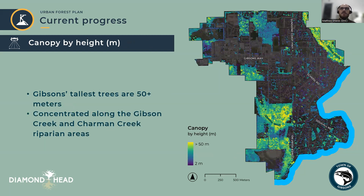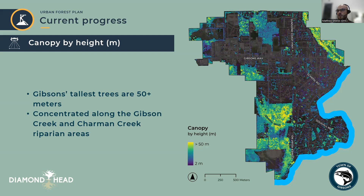The LIDAR method of mapping canopy also enables us to see the size of individual trees in Gibsons and points towards some potential candidates for Gibsons' largest tree. The map on the slide shows the height of trees in Gibsons, and similar mapping can show the breadth or spread of how wide a tree throws its branches. The tall trees, marked in yellow, are mainly found around Gibsons and Charmin Creek — natural areas where trees have sufficient soil volume and water to grow large and tall — although there are a few large trees scattered around the urban area as well.